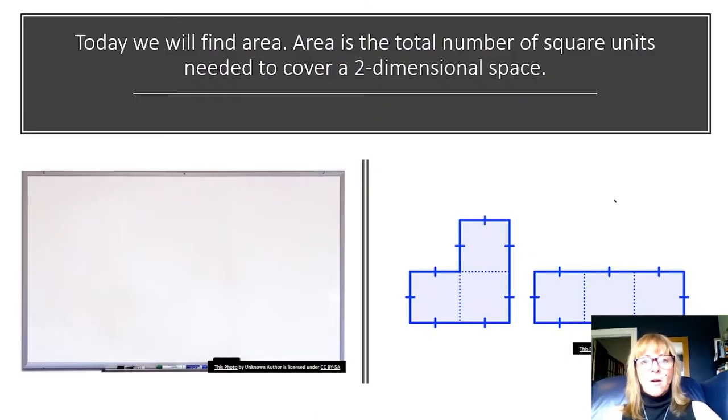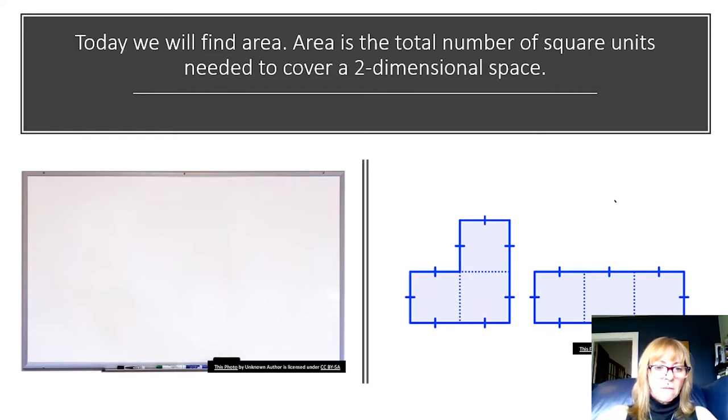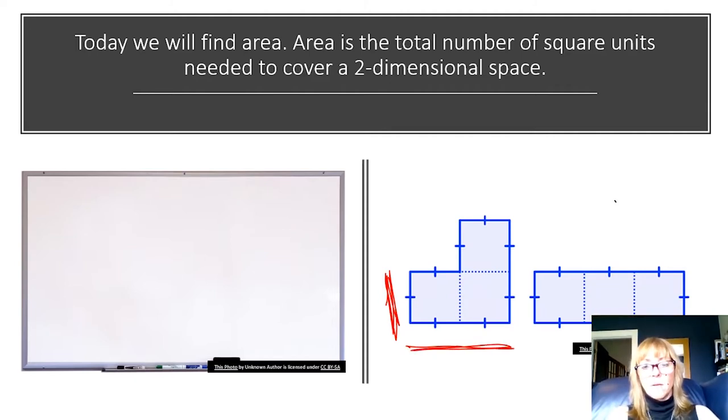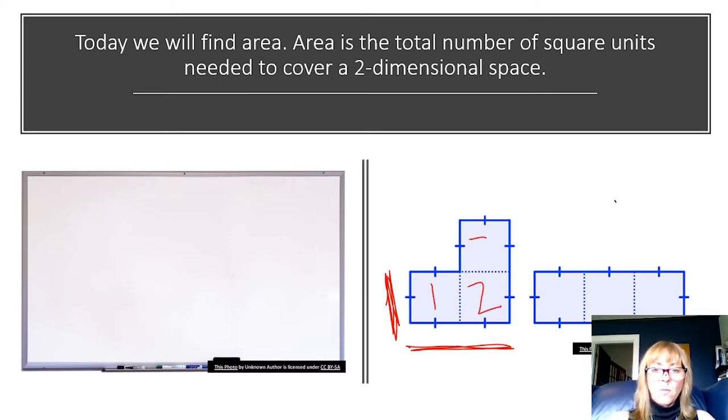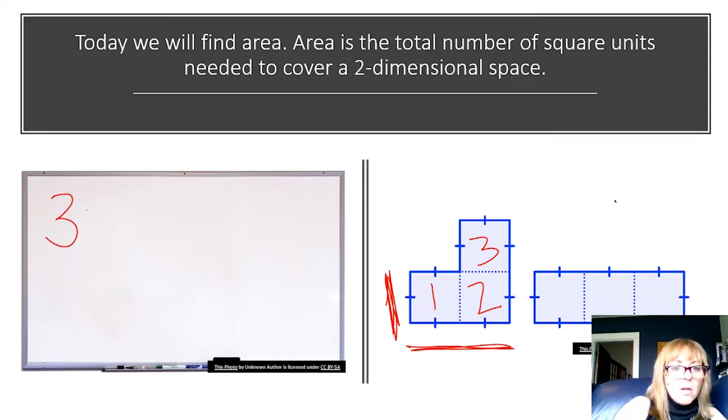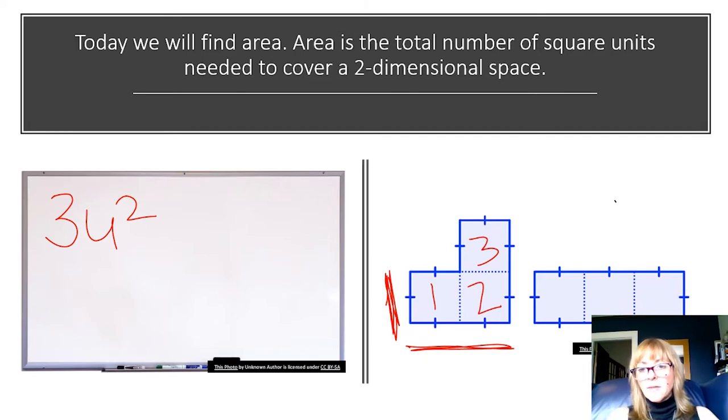In today's lesson, we will find area. Area is the total number of square units needed to cover a two-dimensional space. Dimensions are directions, and in our model, we have directions that show height and directions that show width. We can just count square units and write that as three units squared.